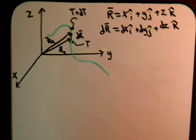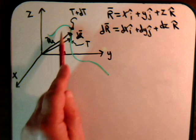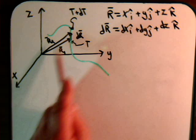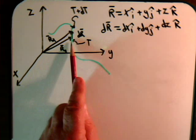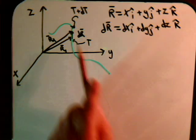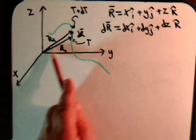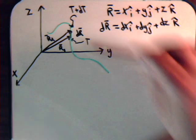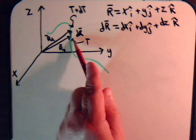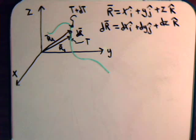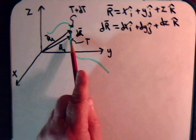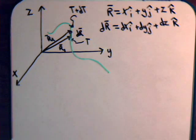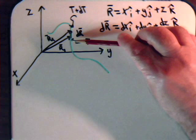The setup involves a space curve along which we determine the temperature, and from the origin going out to the space curve these are position vectors. Here's position vector R1, and at a differential line segment we have position vector R2, so that R1 plus dr equals R2. At position vector R1 we have a temperature of T, and at R2 the temperature is T plus dT — dT being the differential temperature over distance dr.